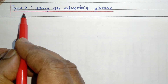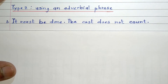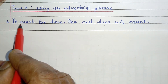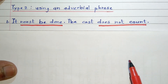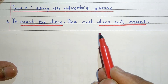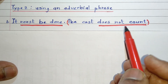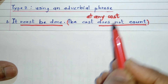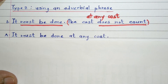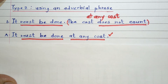Now friends, we come to the second part of the video, wherein we will use an adverbial phrase in order to make a simple sentence. For example: It must be done. The cost does not count. 'Must be done' is one finite verb, and 'does not count' is the second finite verb. We need to eliminate one finite verb, so the second sentence can be eliminated. We can use an adverbial phrase — 'at any cost.' So our answer will be: it must be done at any cost. Here 'at any cost' is an adverbial phrase, and 'must be done' is the only finite verb, therefore our answer is a simple sentence.